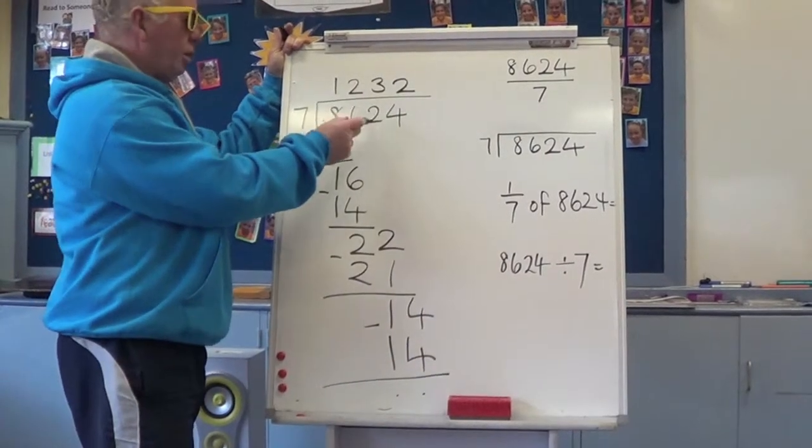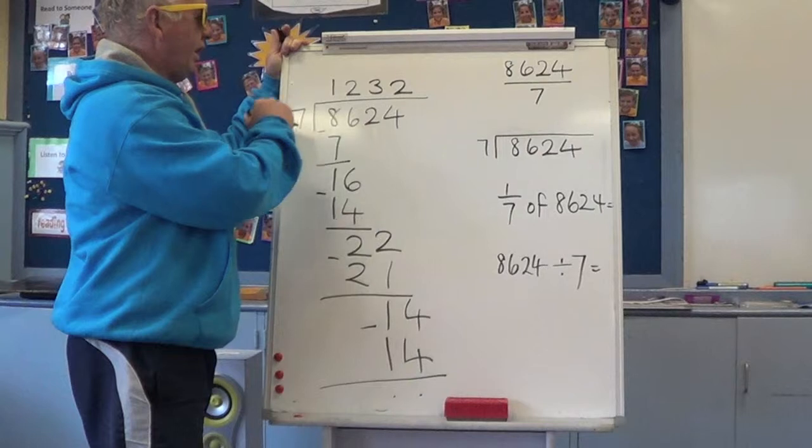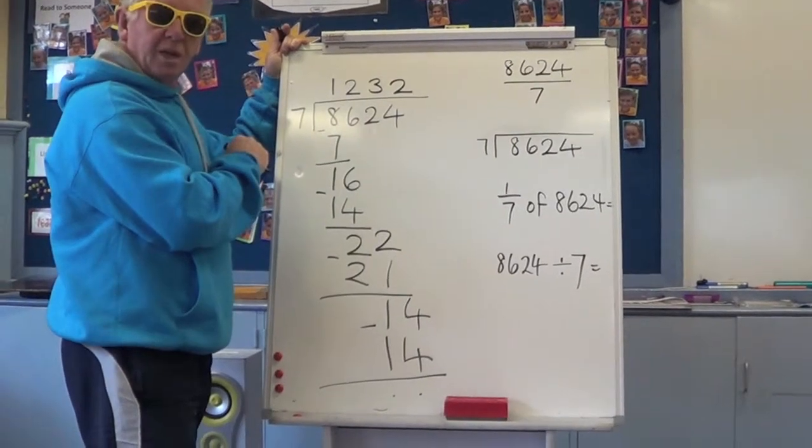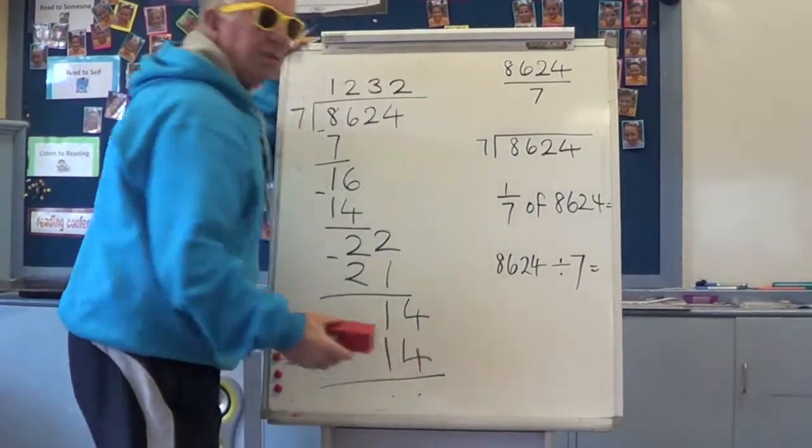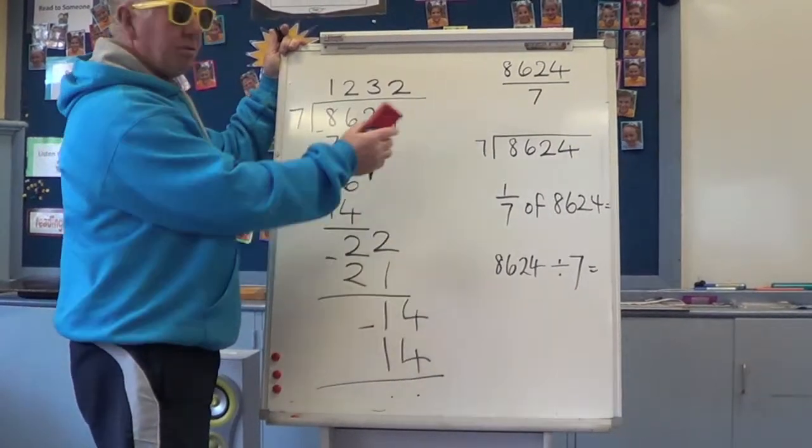8,624 divided by 7 is 1,232. Now let's just keep that number there. Just to check to see if we're right, we can multiply that out. I'm going to rub this out.